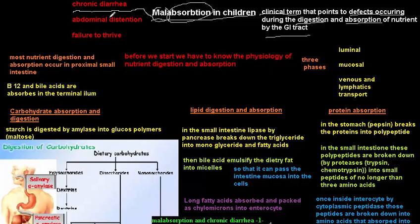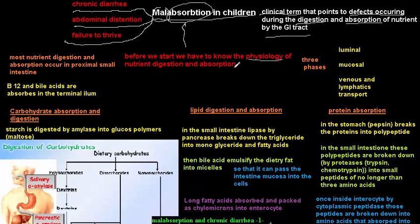It's important to know that malabsorption is almost always associated with chronic diarrhea, abdominal distention, and failure to thrive. Before we start on malabsorption, we need to know the normal physiology of nutrient digestion and absorption — you have to know the normal before you can understand the abnormal.